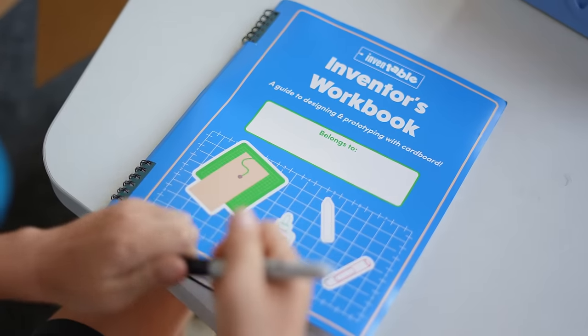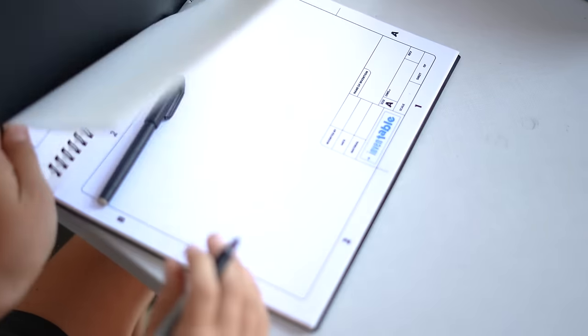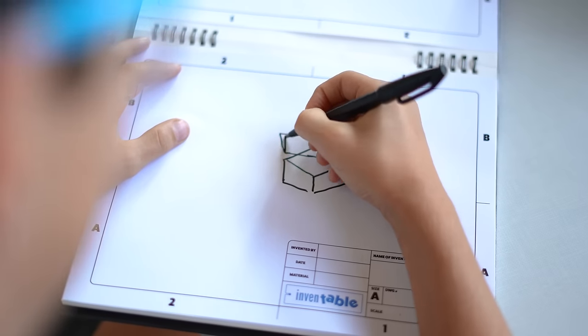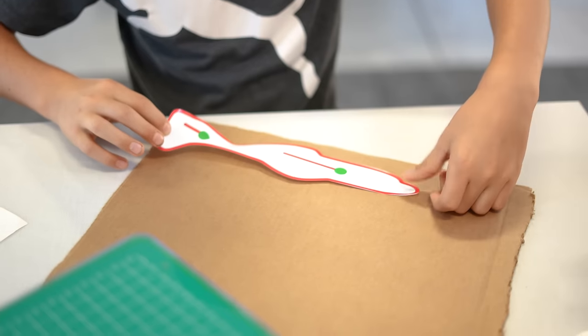In our STEM bundle, the Inventable also comes with a workbook that teaches you how to think in 3D, plan cardboard projects, and has engineering drawing pages to sketch your ideas. It also comes with starter projects to get your creative ball rolling.